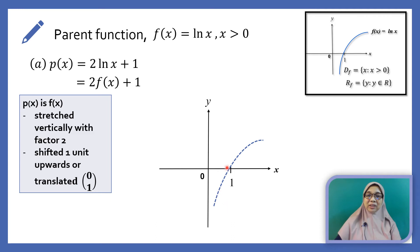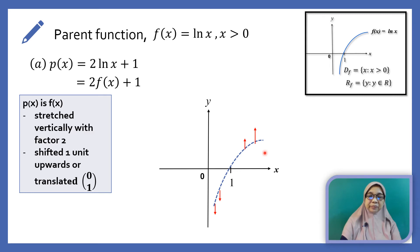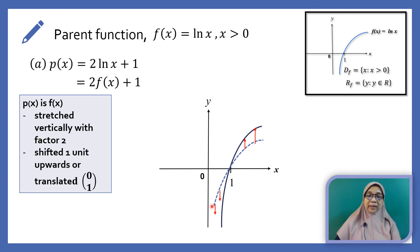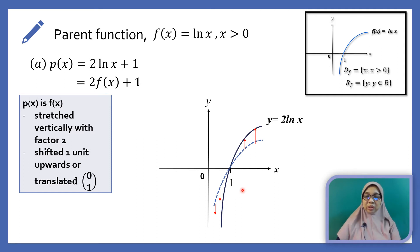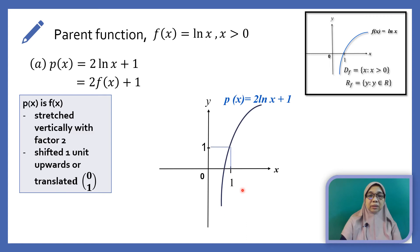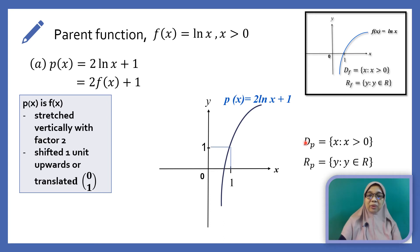We have the parent function ln x. We stretch it vertically with factor 2 — observe how the curve is stretched upwards above the x-axis and downwards below it. The point (1, 0) remains the same, giving us the curve y equals 2 ln x. Next, we shift the curve 1 unit upwards. So we have the graph of b(x) equals 2 ln x plus 1. The domain is for all x greater than 0, and the range is for all y in ℝ.